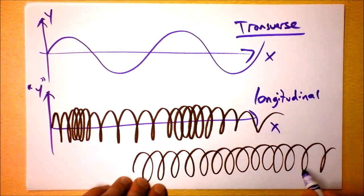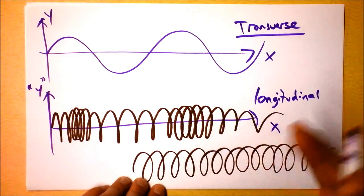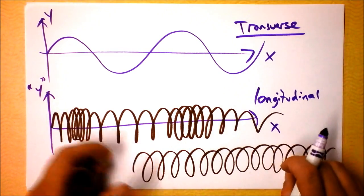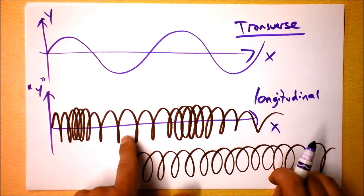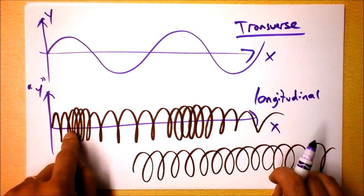That's this slinky in this picture right here. And the medium in sound is air or whatever substance it's going through. And it causes a densening and a rarefaction, a compression and a rarefaction.